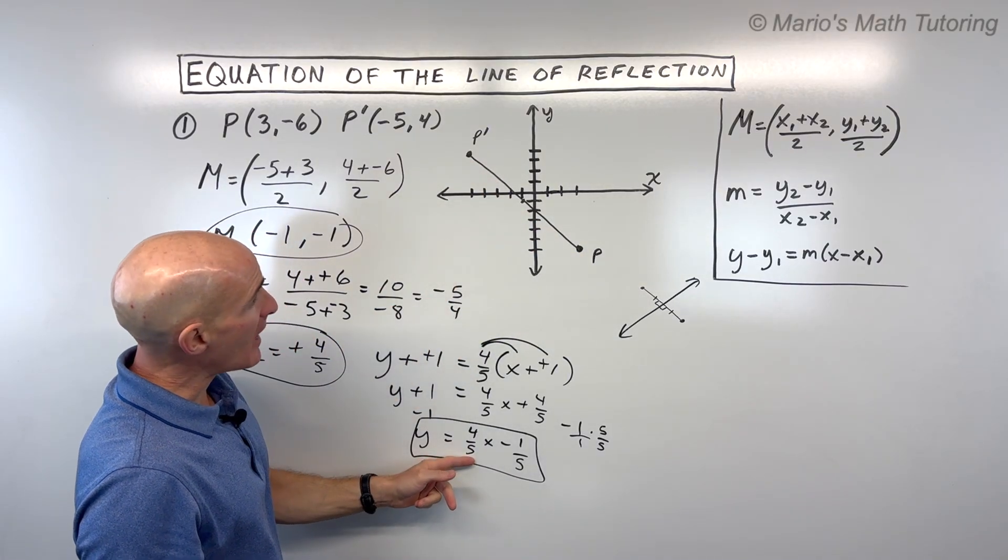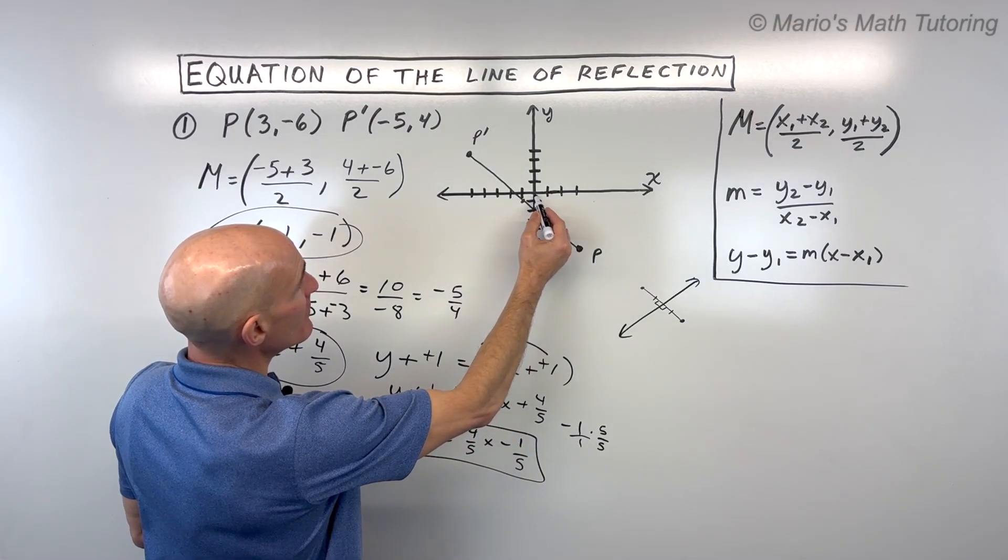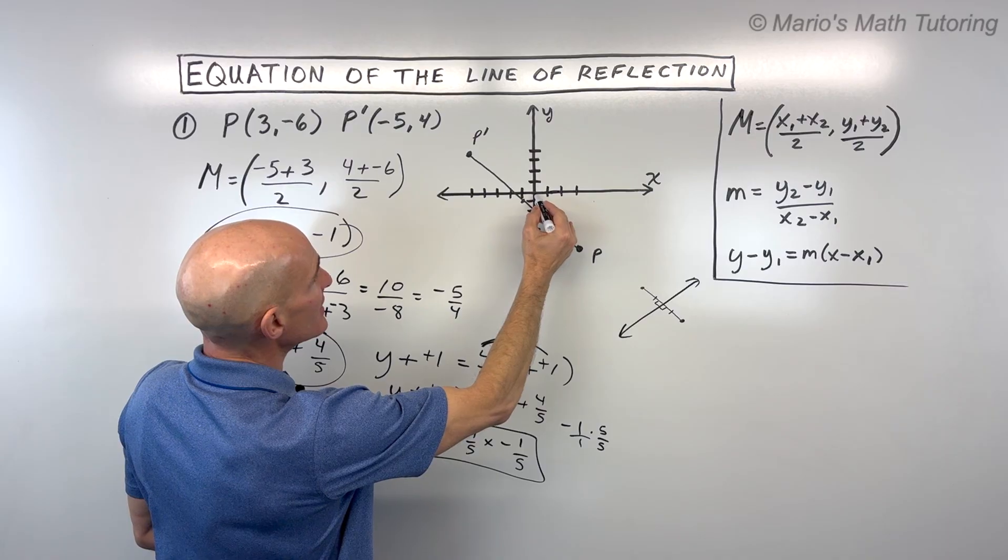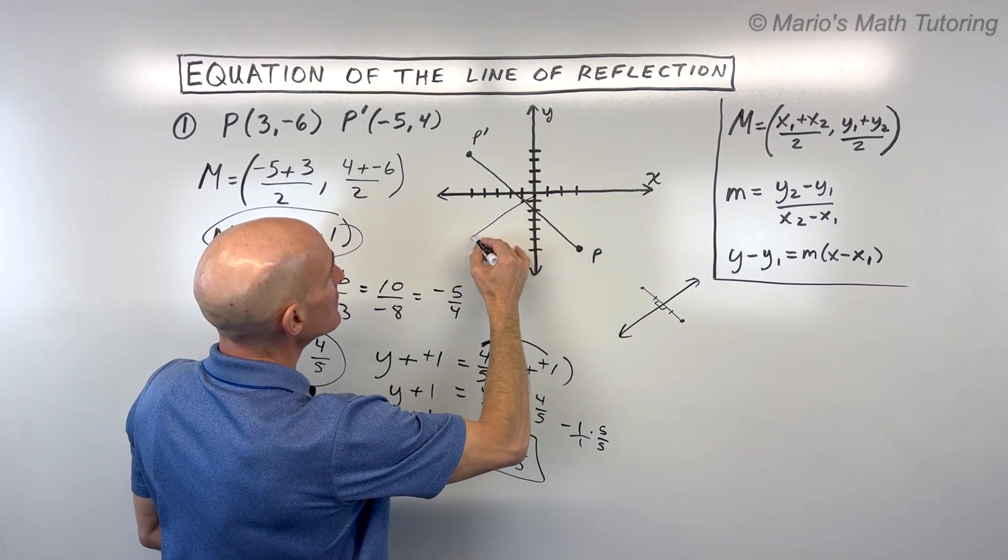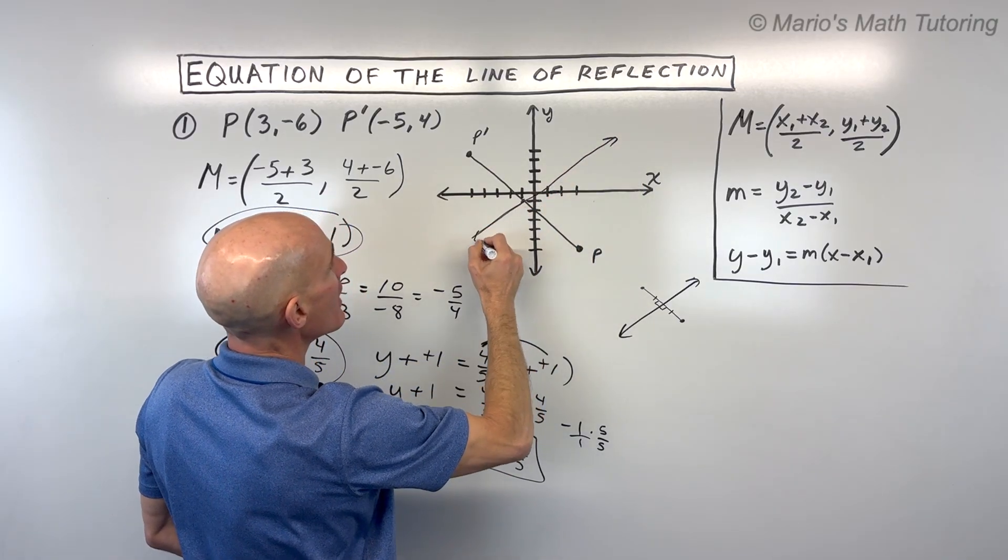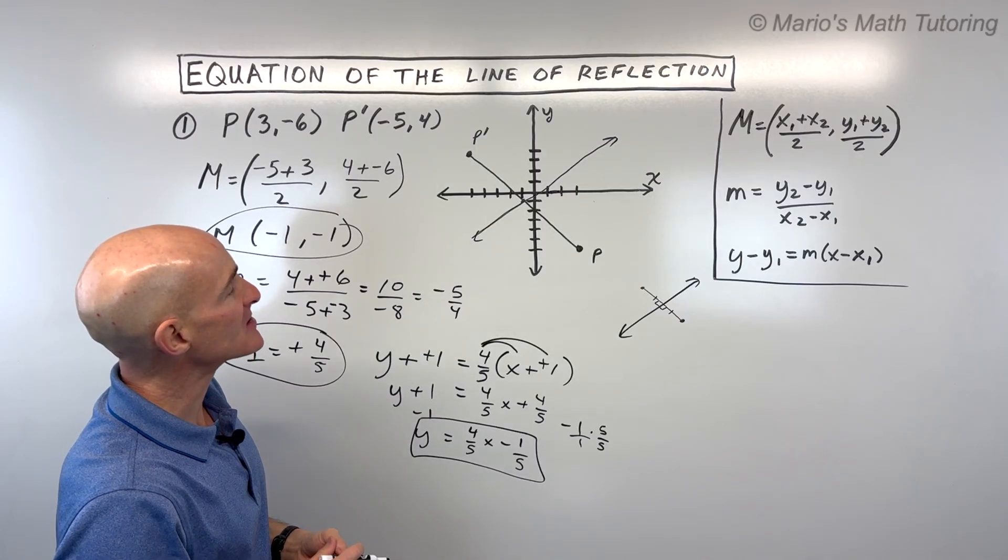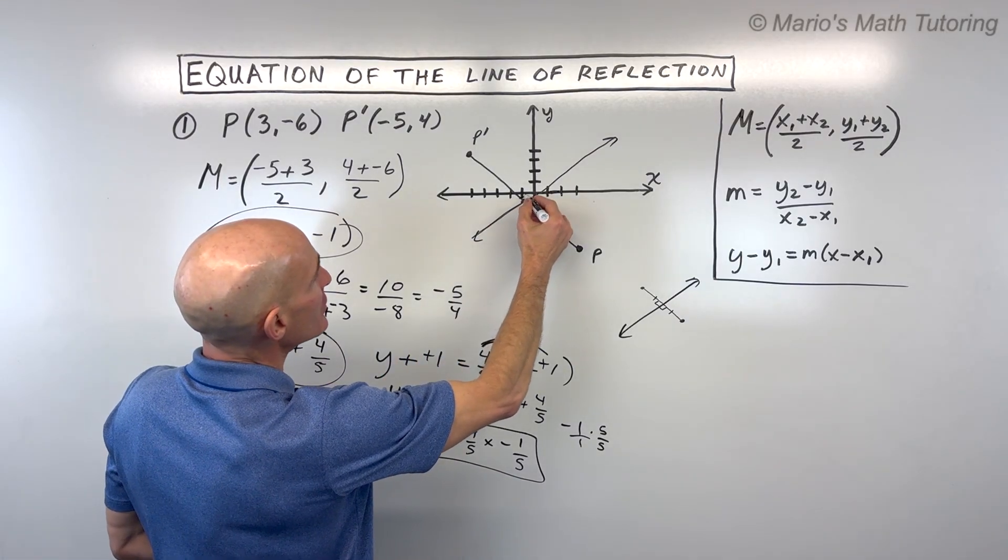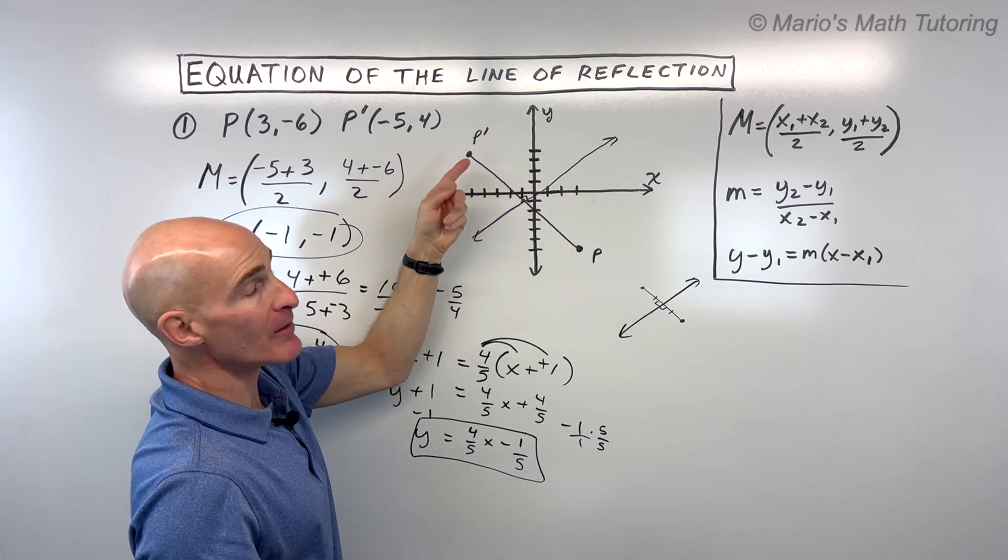So let's graph this just so we can visualize. So a y-intercept of negative 1 fifth is right about here. So I'm just going to sketch that in roughly and it's going to be perpendicular to this line. So it should look something like this. Now my graph is not exactly perfect because of the spacing on both the x and y axis, but you have a rough idea here of what's happening. We're just folding this over this line and we're getting that mirror image.